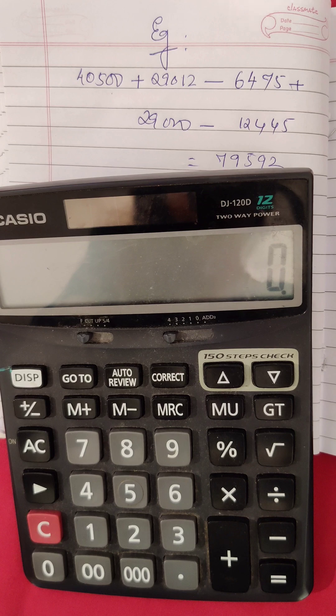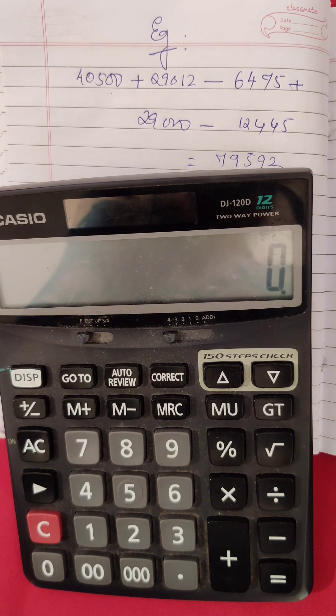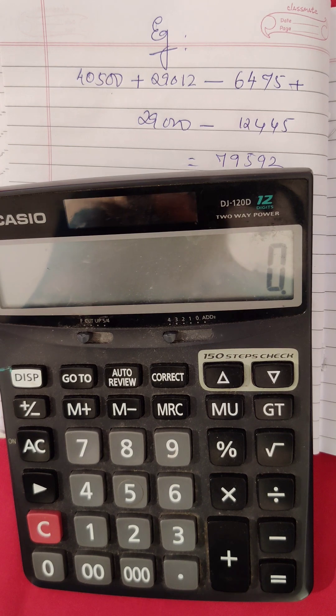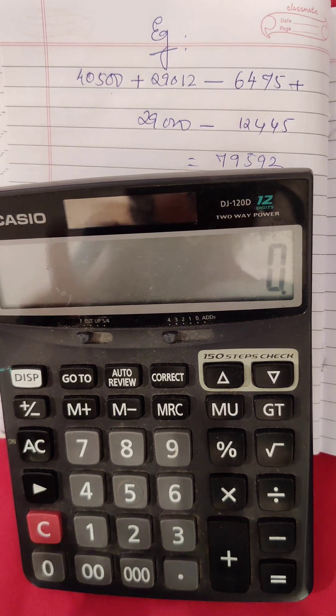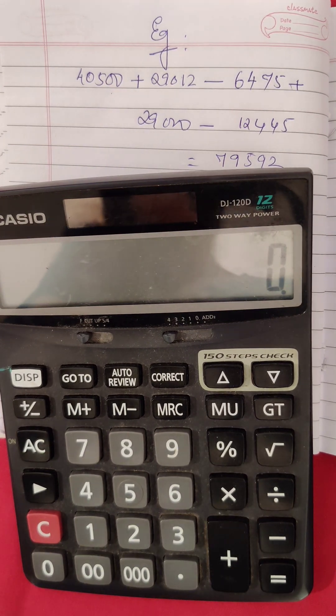When you have a list of numbers to be added up, knowing how to use M+ and M- is really a big advantage. Okay, so let us start. First, you have to add up 40,500 plus...